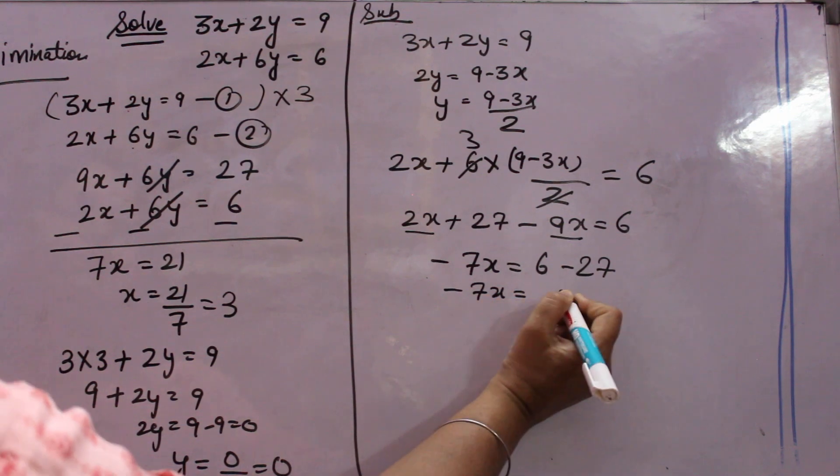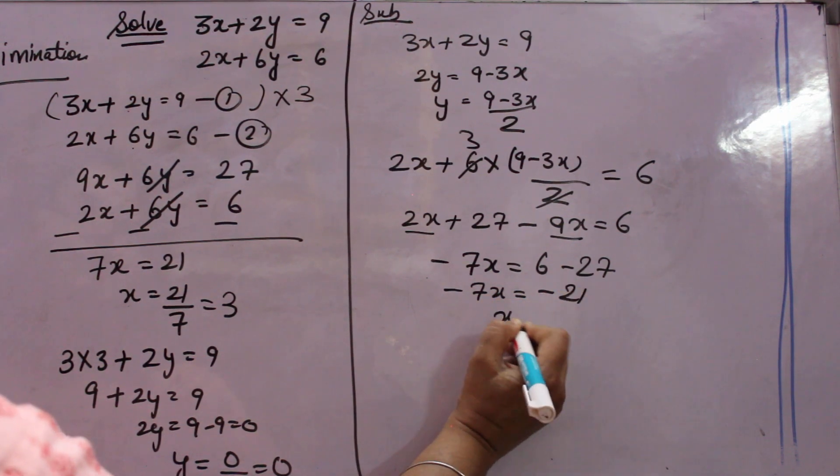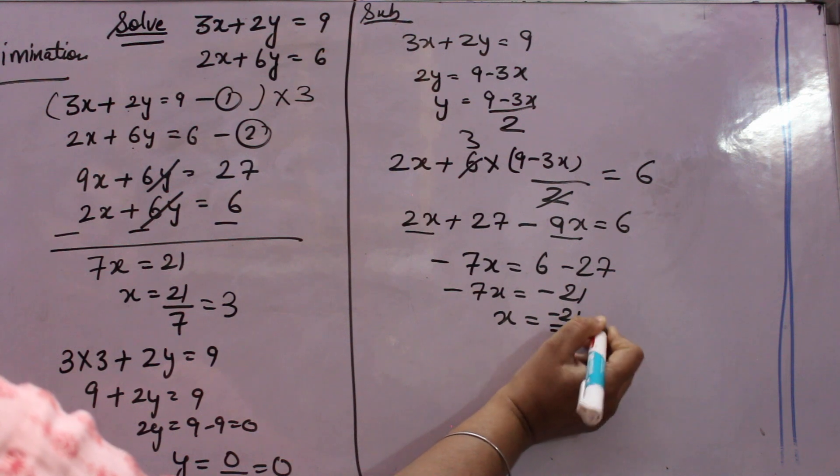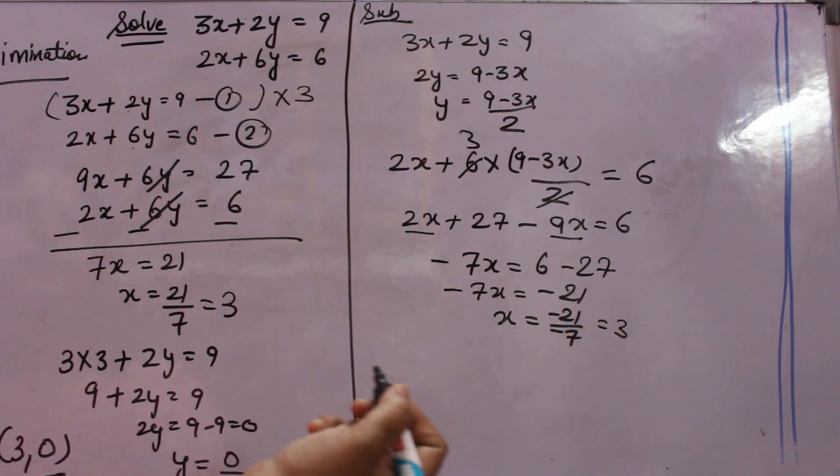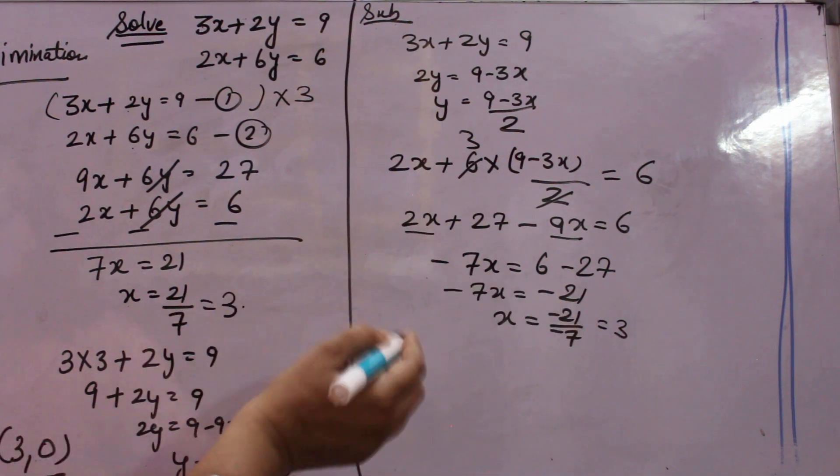6 and 27 you take that side. It will become minus 27. So minus 7x will come equal to minus 21. x will come minus 21 over minus 7 that is 3. So x value came again 3. See, values are same. 3, 3 coming.